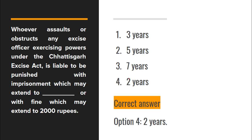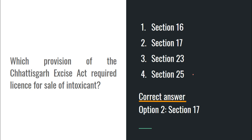Next: Whoever assaults or obstructs any excise officer exercising powers under the Chhattisgarh Excise Act is liable to be punished with imprisonment which may extend to two years, and a maximum fine of 2000. This provision is under Section 17 of the act. One important point: if any condition is to be imposed for granting a license, it is the excise commissioner who imposes such conditions. So option 2 is correct.